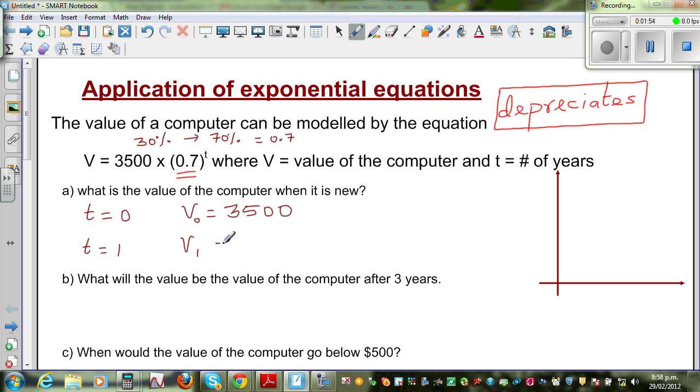When t is equal to 1, after 1 year, v1 will be 3500. This is nothing but 70% of this. When you're multiplying by 0.7, you're finding 70%. So, when you're finding 70% of something, it is depreciating by 30%.